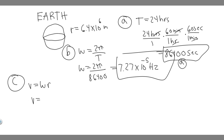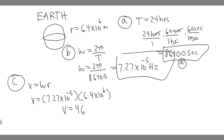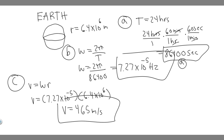Plug in omega, which is 7.27 times 10 to the minus 5, and then multiply by the radius: 6.4 times 10 to the 6. So 7.27 times 10 to the minus 5 times 6.4 times 10 to the 6. You're going to get that the velocity is equal to about 465. This is measured in meters per second since it's linear. So your velocity is going to be 465 meters per second — that's your answer to C.